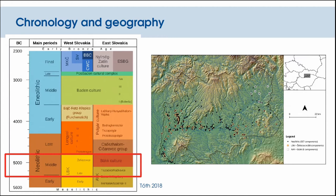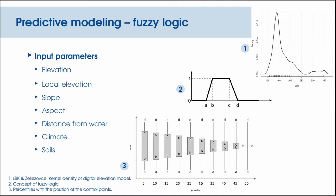Regarding the chronological and geographical background, we are focusing on the period of the Middle Neolithic, from 5300 to 4900 BC, during which several archaeological cultures were present. Our study area consists of the river Ipeľ valley with all of its tributaries. From this area, we collected around 500 components through literature study and field walking. For predictive modeling, only sufficiently dated and localized components were used. I will present the fuzzy logic model and my colleague will present the neural networks.